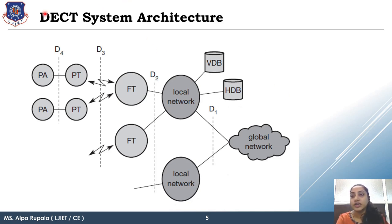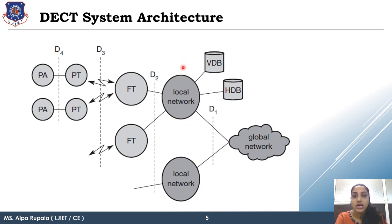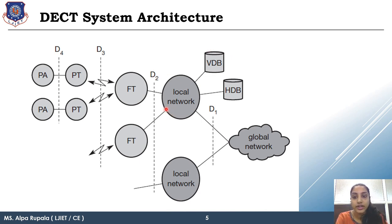The DECT system architecture shows a global network connecting multiple local networks. Similar to MSC having HLR and VLR in GSM, local networks in DECT have HDB and VDB — Home Database and Visitor Database. All subscriber information is stored in HDB, and roaming-related data, a subset of HDB, is stored in VDB, similar to the HLR and VLR functionality.